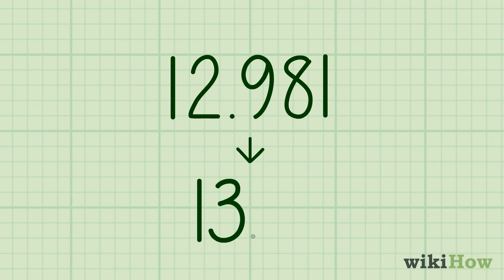So if you're rounding up the number 12.981, you'd round up to 13.0.